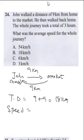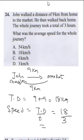Now remember your speed — it's total distance over time taken. So this is going to be 18 divided by 3 hours. So the final answer is 6 km per hour. That's my final answer and the correct answer is C.